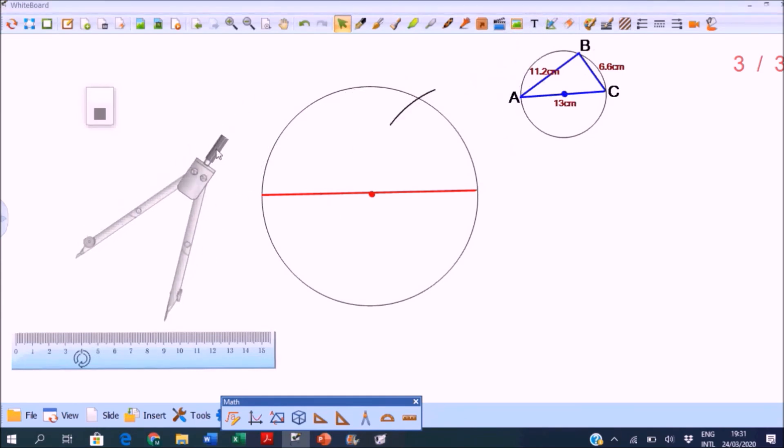Now adjust the radius of the compass to 11.2 centimeters. Place the compass needle on the other endpoint of the diameter, then cross the first arc that we have drawn.